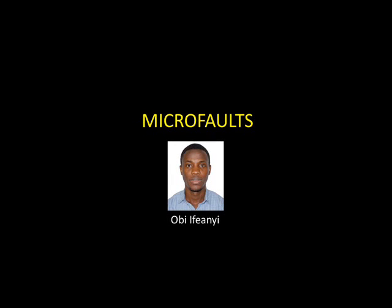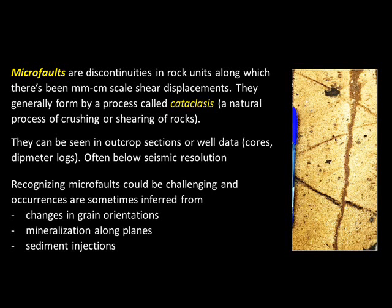Hello once again, this is Obe Efein and you're welcome to my chat room. I'll talk very briefly about micro faults. Micro faults are discontinuities in rocks along which there's been very small scale offsets or displacements. They form during the crushing or shearing of these rocks and can be seen in outcrop sections or well data. Oftentimes we find them very much below seismic resolution.